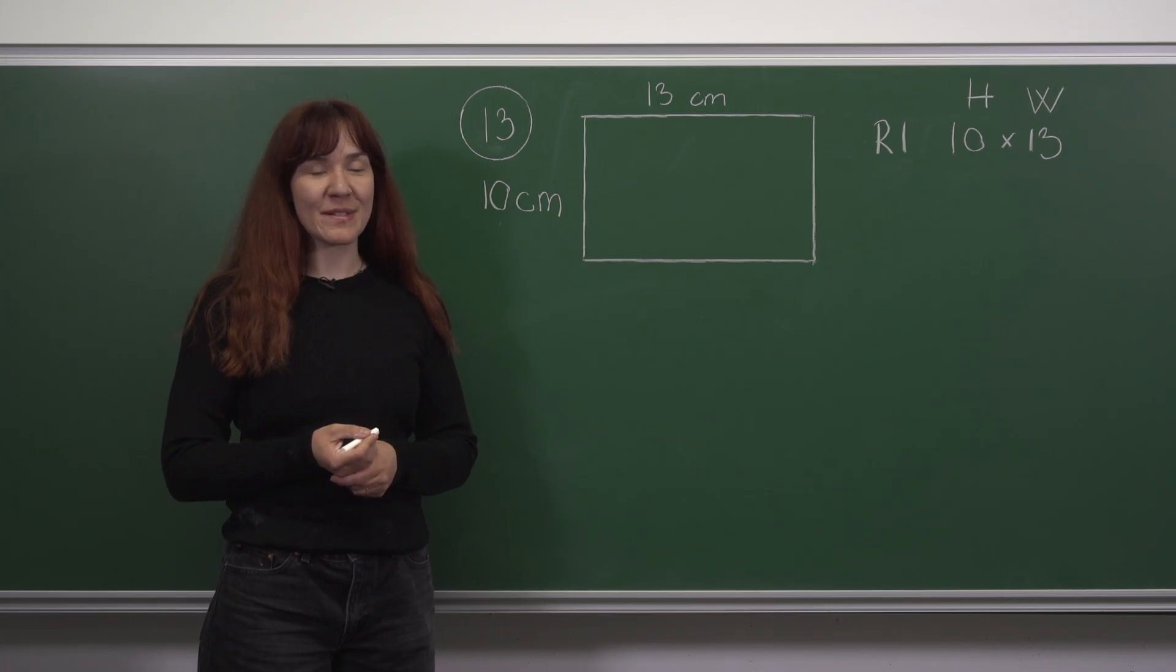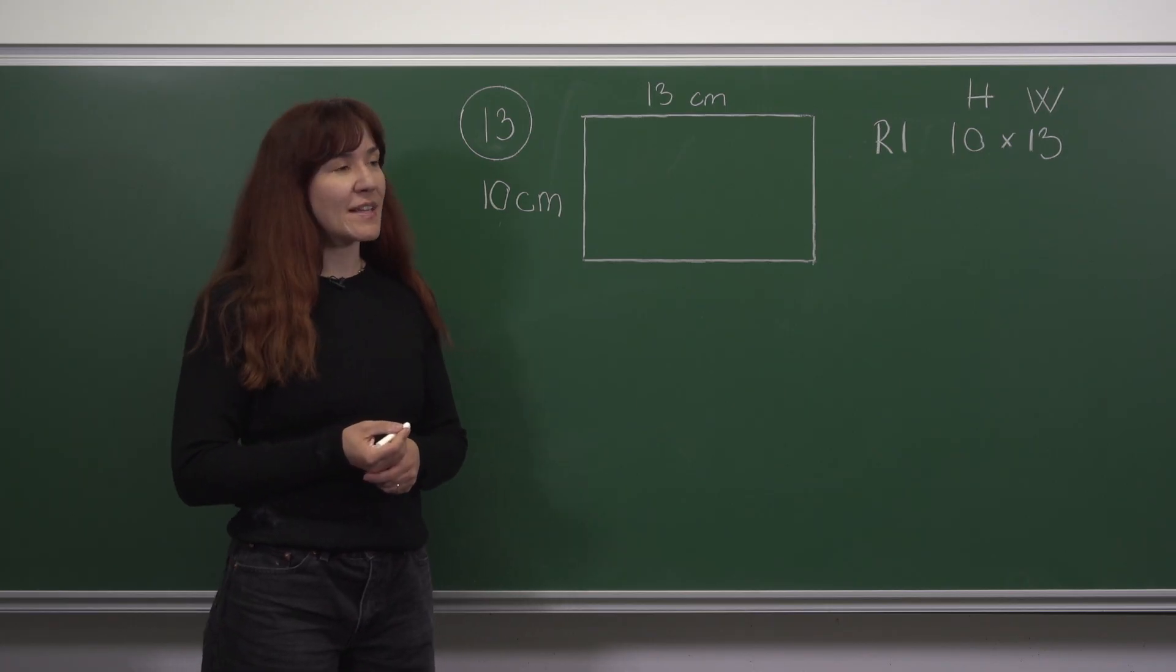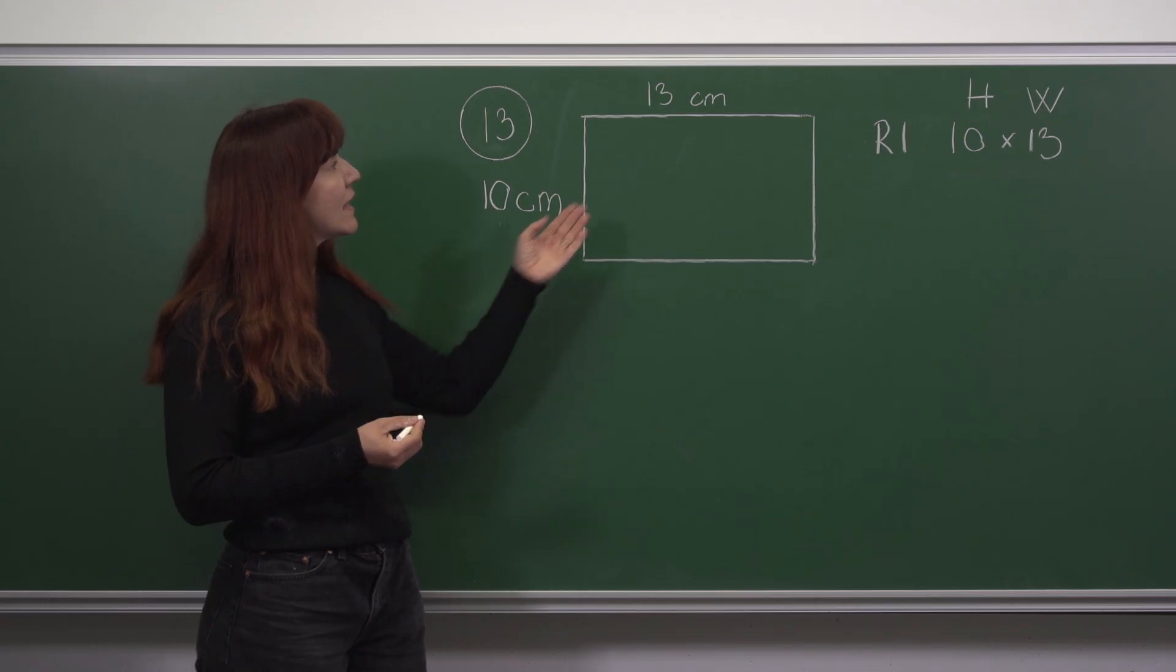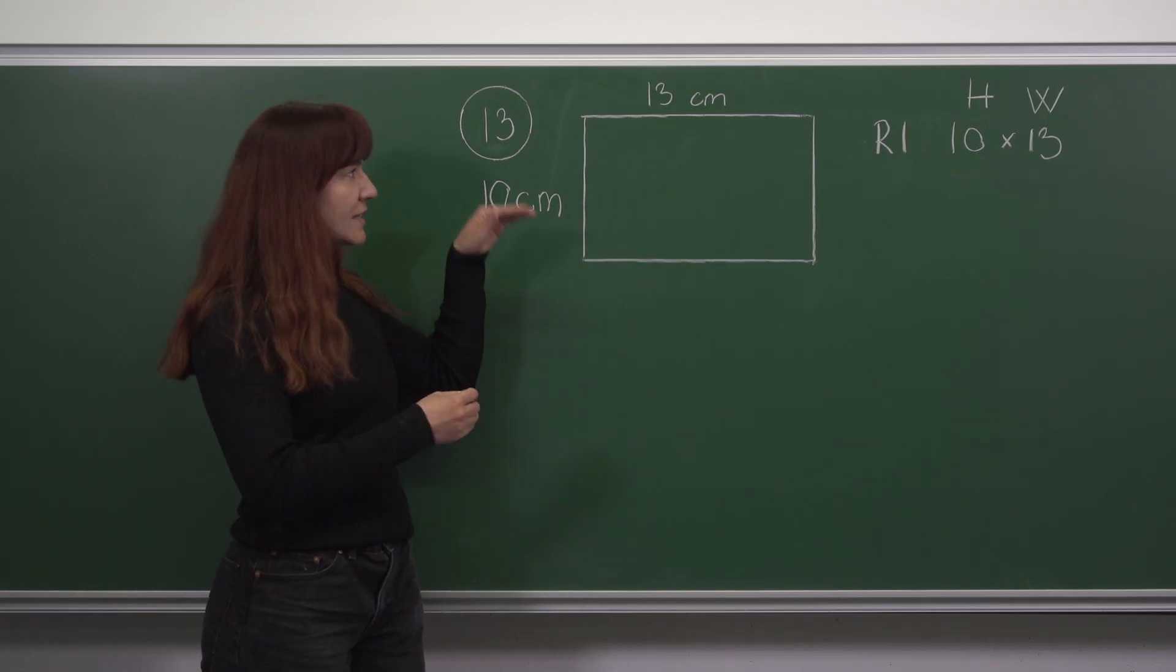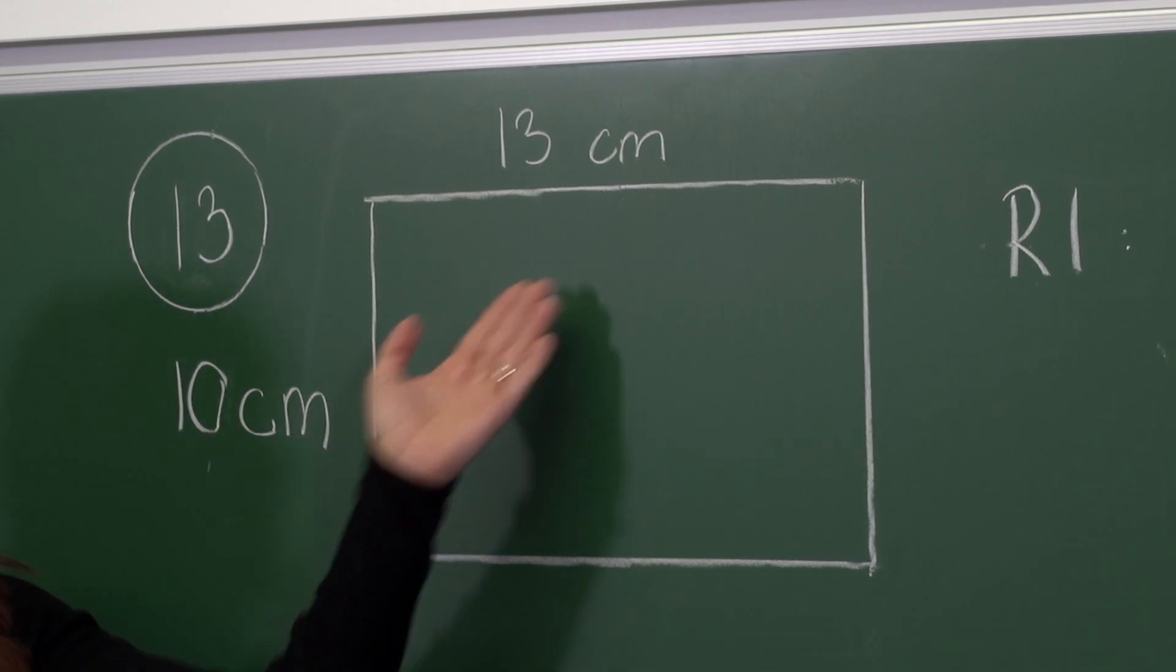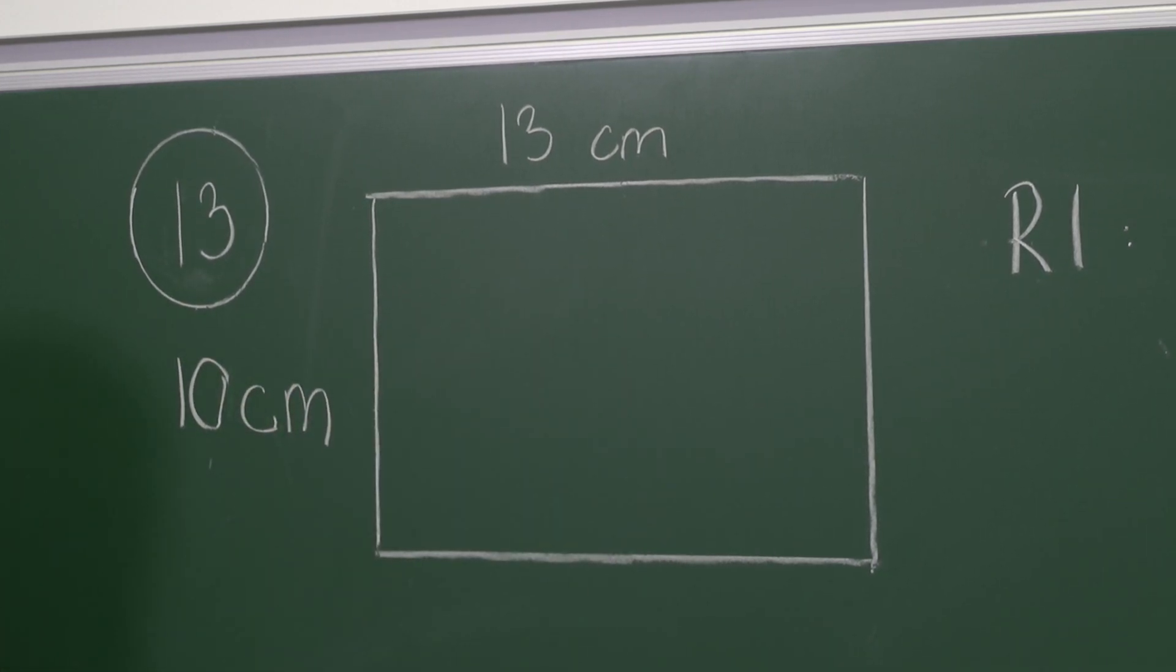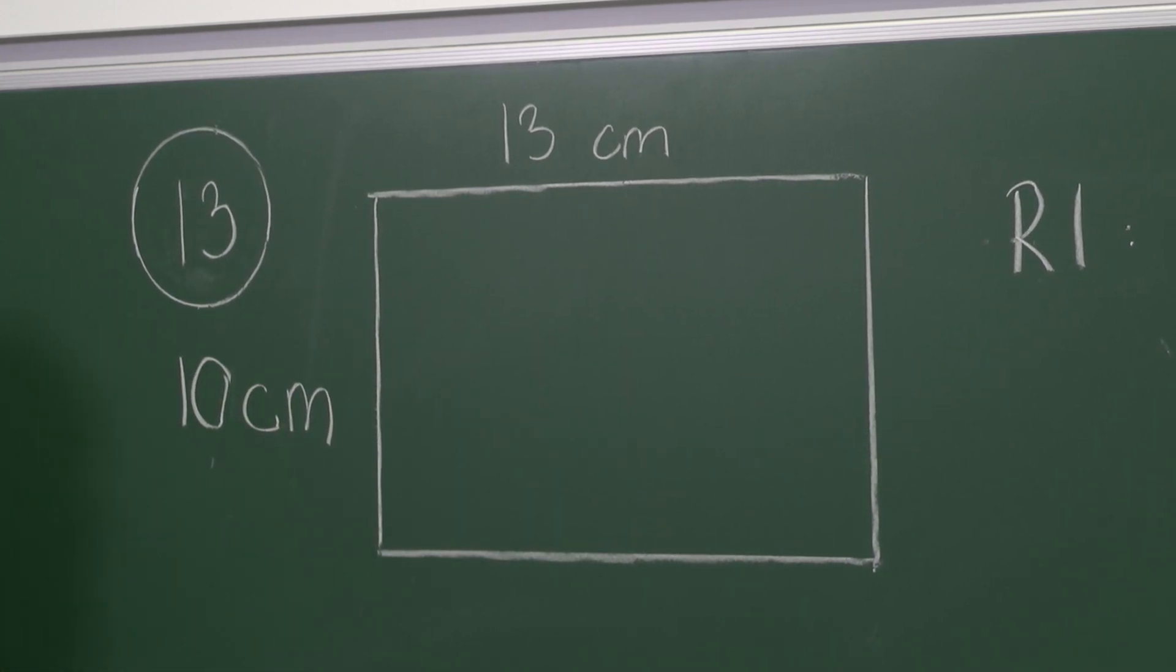This question concerns a sequence of rectangles. The first rectangle has a height of 10 cm and a width of 13 cm. Each consecutive rectangle is 2 cm taller and 1 cm wider than the previous one. The question is how many of these rectangles will be squares?